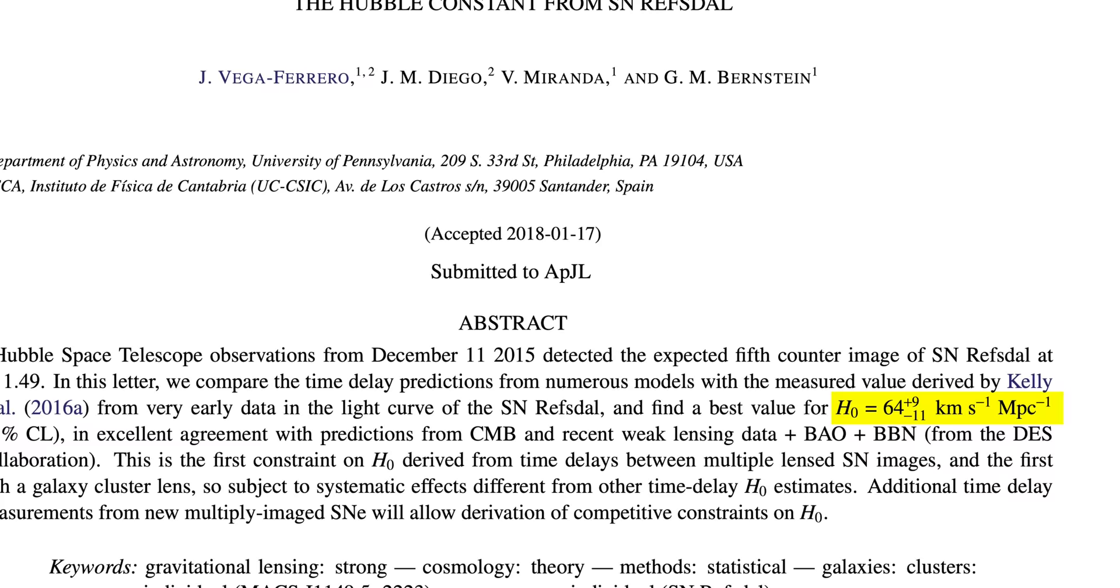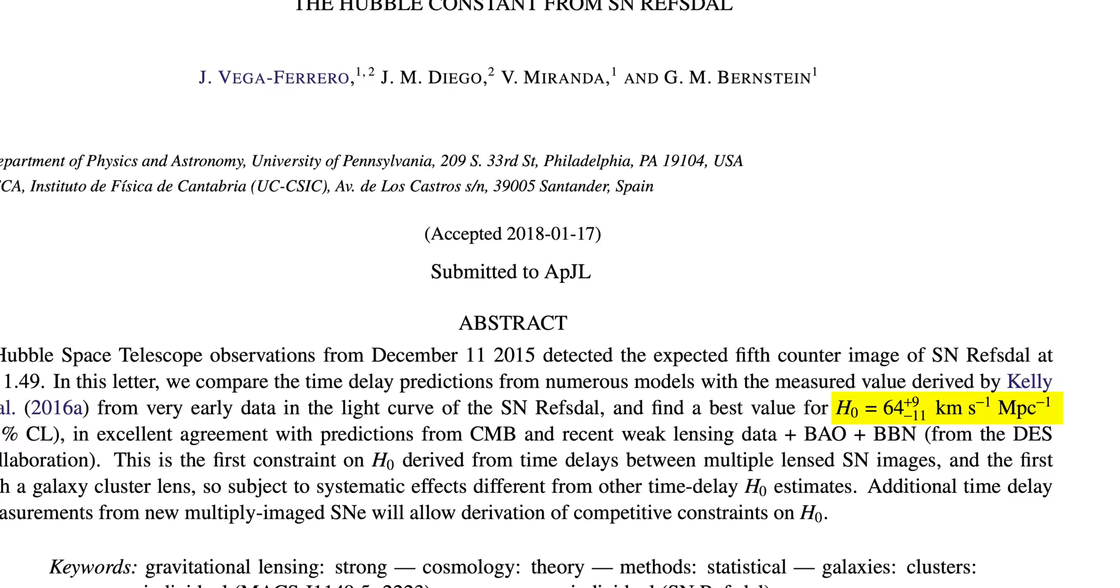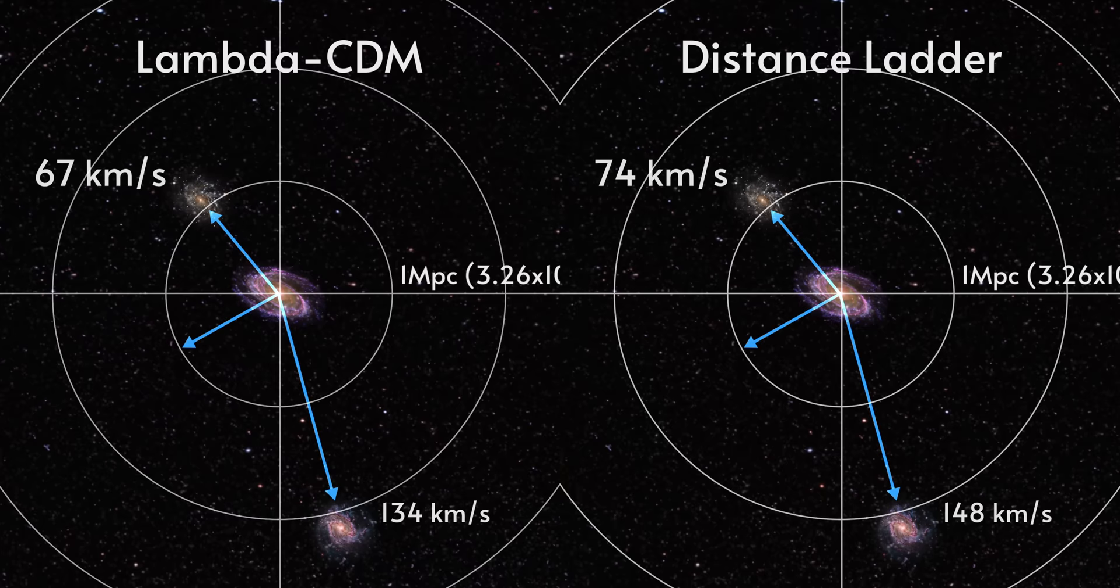Calculations of the Hubble constant from this data yield a value of 64 kilometers per second per megaparsec. Now although that result has large error bars, it is more in line with the measurements of the cosmic microwave background radiation than with the distance ladder method.